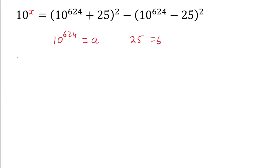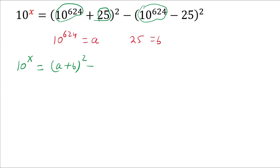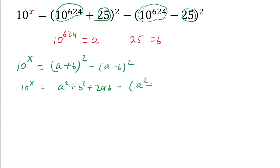Then in the left hand side we have 10 power x, and on the right hand side this is a and this is b. So we get (a + b)² minus (a - b)². Expanding: (a + b)² is a² + b² + 2ab, minus (a - b)² which is a² + b² - 2ab.